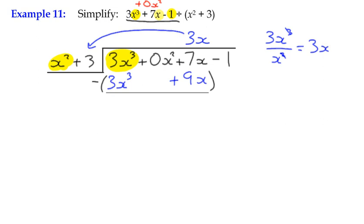3x cubed minus 3x cubed goes to 0. We've got no x squared term either. So we've got 7x subtract 9x is negative 2x. We've then got our negative 1 to bring down.